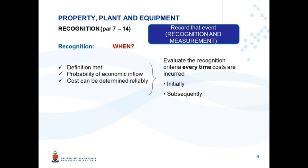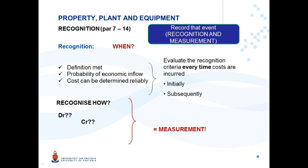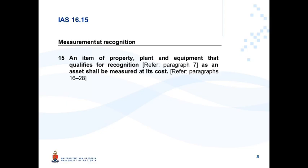Once this decision has been made and we can conclude that an item may be recognized as property, plant and equipment, we need to ask: how do we recognize it? We can now write a journal entry, but before we can do that we need an amount — and that is referred to as measurement. Measurement involves initial measurement and subsequent measurement. This presentation focuses on initial measurement.